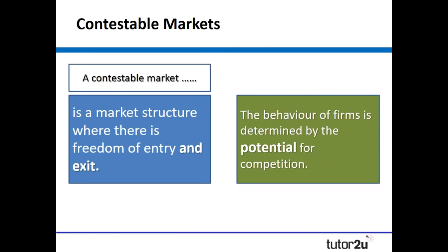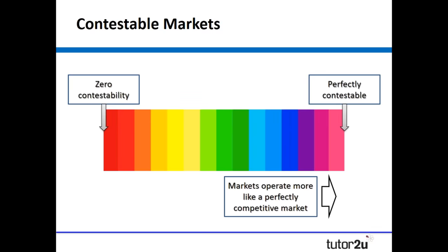With a contestable market, we're talking about freedom of entry and exit — how markets are impacted not just by the level of competition within them, but also the potential for competition. In theory, all markets are contestable, but with different levels of contestability. Some markets have close to zero contestability, perhaps due to strong customer loyalty, while at the other end a perfectly contestable market has no sunk costs, meaning any firm could enter with very little risk. The closer to that perfectly contestable end of the spectrum, the more firms will operate as if in a perfectly competitive market.